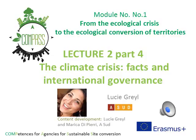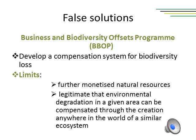A false solution regarding biodiversity is the Business and Biodiversity Offsets Programme (BBOP), composed of 75 companies, financial institutions, governmental agencies, and NGO representatives. The program aims to develop a compensation system for biodiversity loss. The main critique is that it further monetizes natural resources and legitimates the practice by which environmental degradation in one area can be compensated by creating a similar ecosystem anywhere else in the world. You cannot replace biodiversity in one place by putting it in another — you need to protect and ensure biodiversity is conserved everywhere.